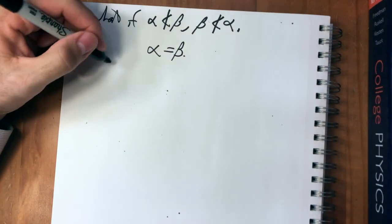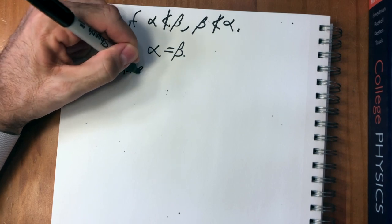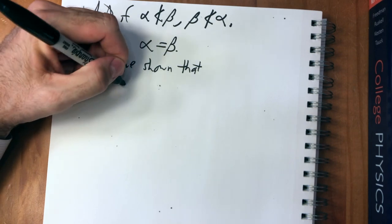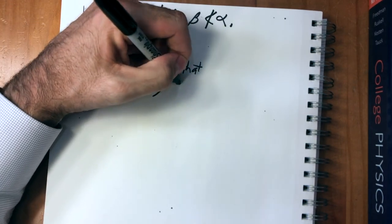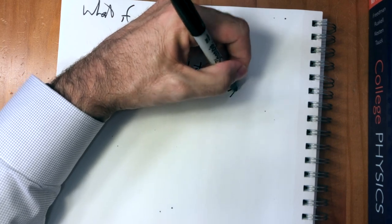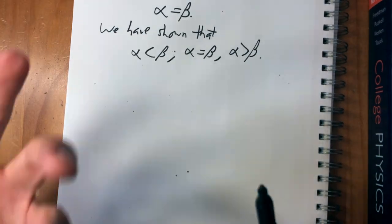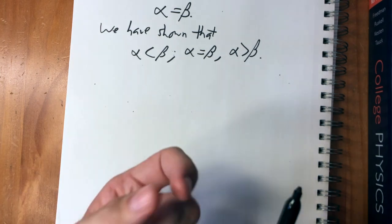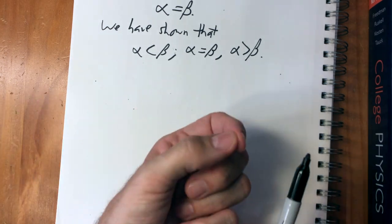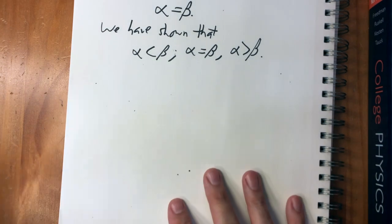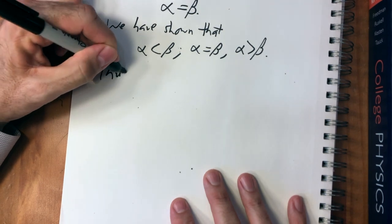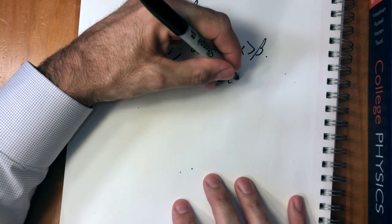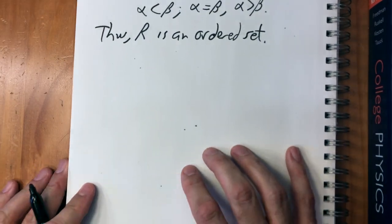With that we've shown that for any two cuts, one and only one of the three relations holds. It's very interesting: we have these sets, and just by asking whether one is a proper subset of another, we're able to say one is greater or less than the other. Thus R is an ordered set.